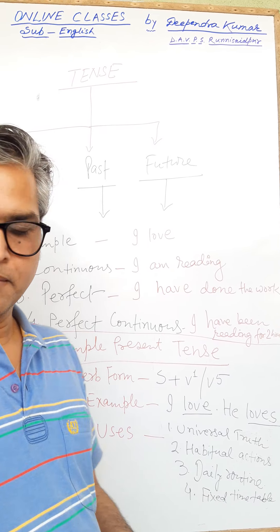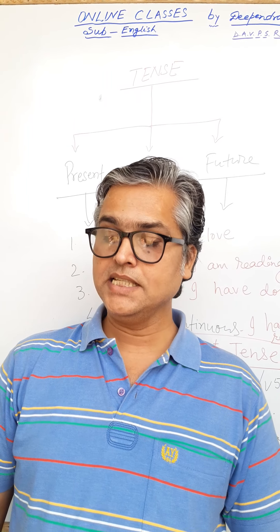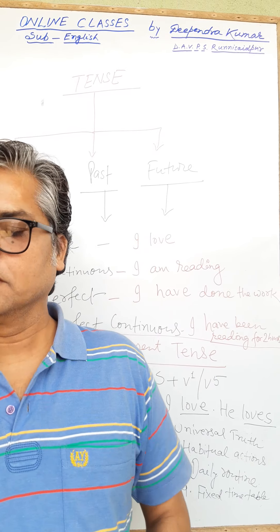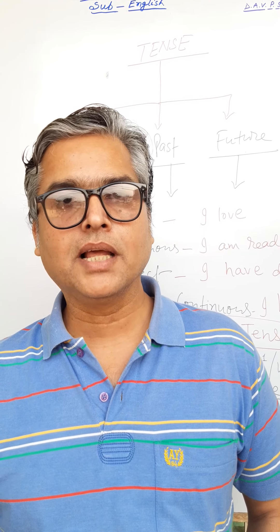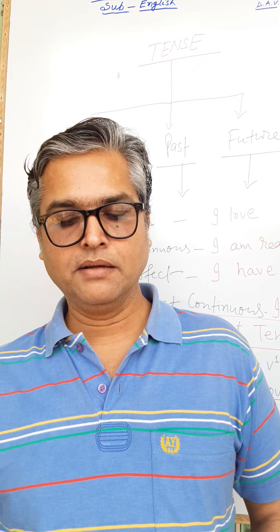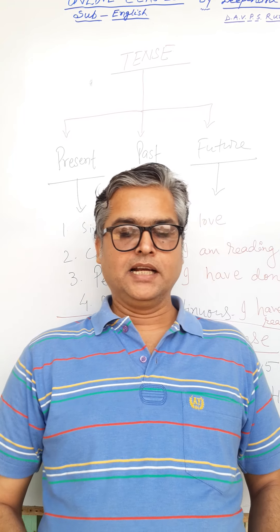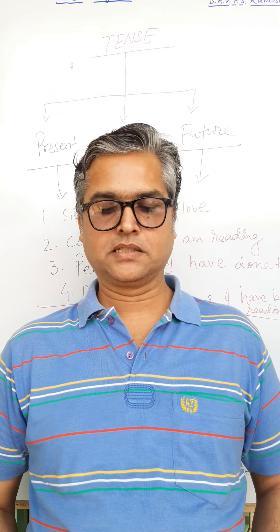'I have been reading for two hours' is present perfect continuous. When we go into detail we will learn more and more usage of each tense in active and passive forms. Simple present tense is used to express habitual action — for example: 'He takes milk every morning' — this is his habit. 'I get up every day at 5 o'clock' — this is my habit.